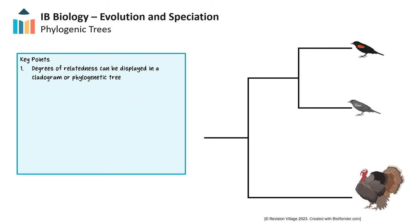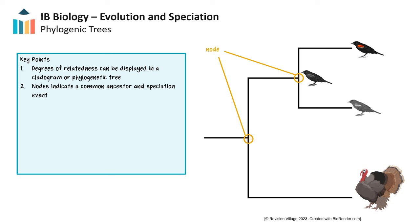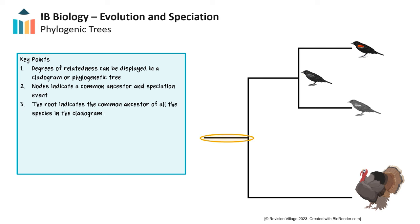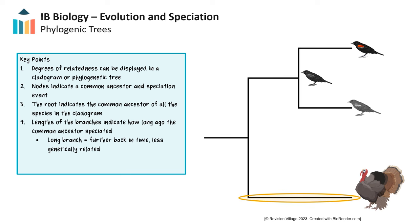When genetic or amino acid sequences have more differences, this indicates the species are less related and their last common ancestor speciated further back in time. When looking at many different species, the degree of relatedness can be organized into a cladogram or phylogenetic tree. Branching points or nodes indicate speciation events. The root indicates the last common ancestor of all represented species, while the length of each branch indicates how long ago speciation occurred — a long branch indicates a common ancestor further back in time, and a shorter branch indicates a more recent common ancestor with greater genetic similarity.